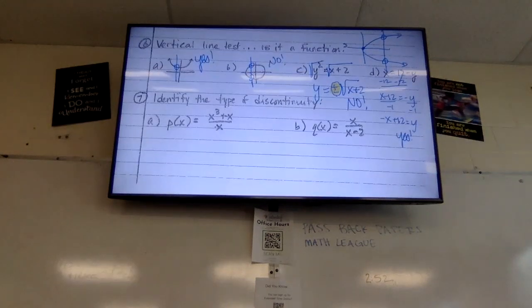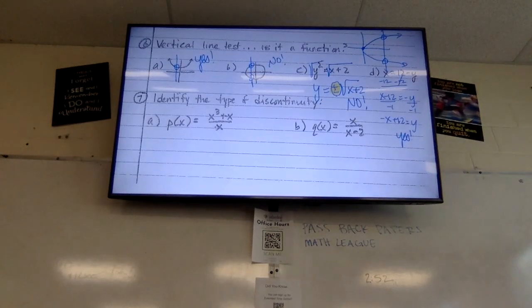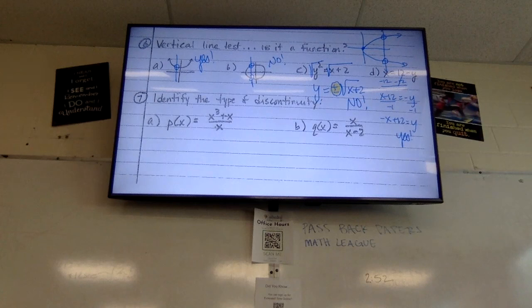All right. The last two are, the last two on this side that we're going to do are identifying types of discontinuity. I'm actually going to graph these on the calculator because we haven't talked yet about rational functions and asymptotes and dis-including points. So let's graph these on our calculators really quick. My phone's not dead. We'll graph on my phone.